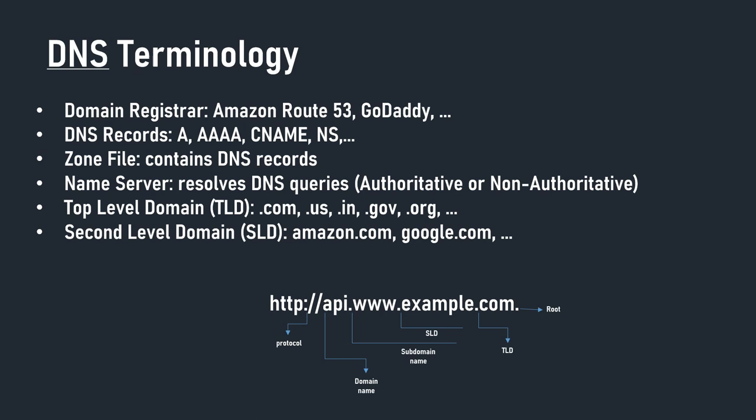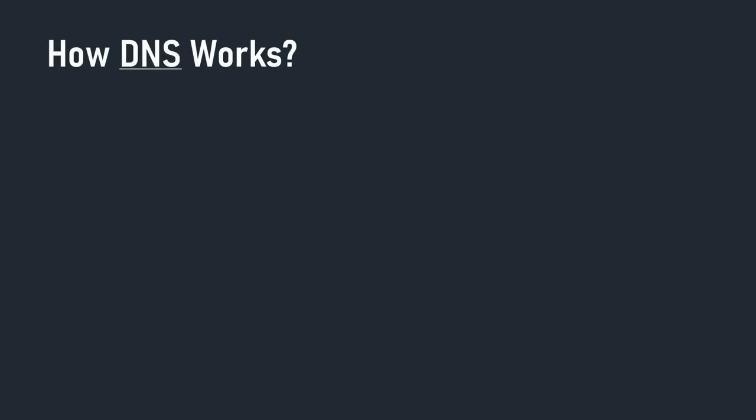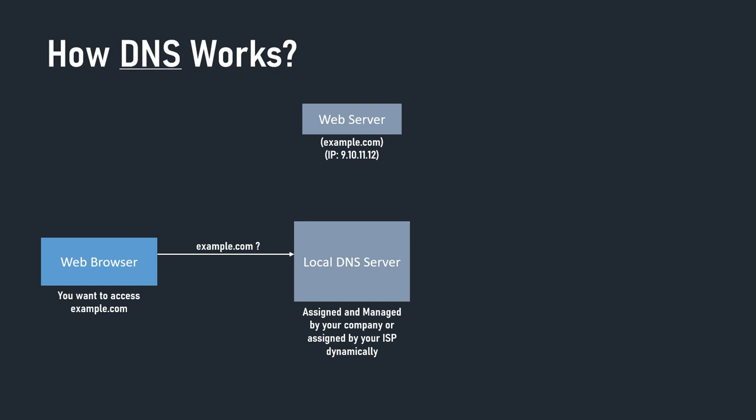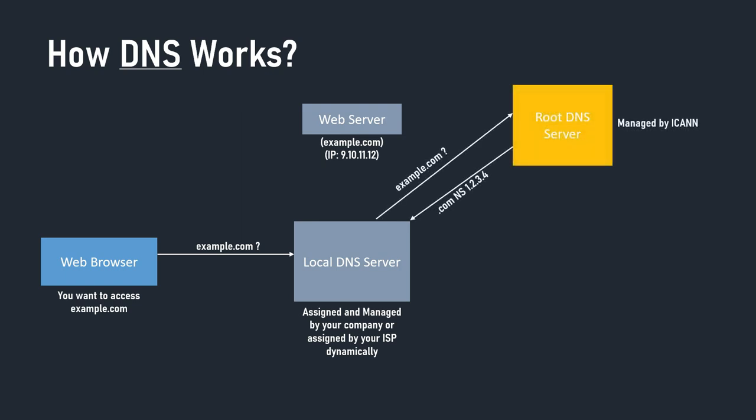Now that we know some terminology, let's look at how DNS works. We have a web server — let's say an EC2 instance — with a public IP of 9.10.11.12, and we want to be able to access it using the example.com domain name. We are going to register this example.com domain name on one of our DNS servers. Let's see how your web browser can access it and get a response.